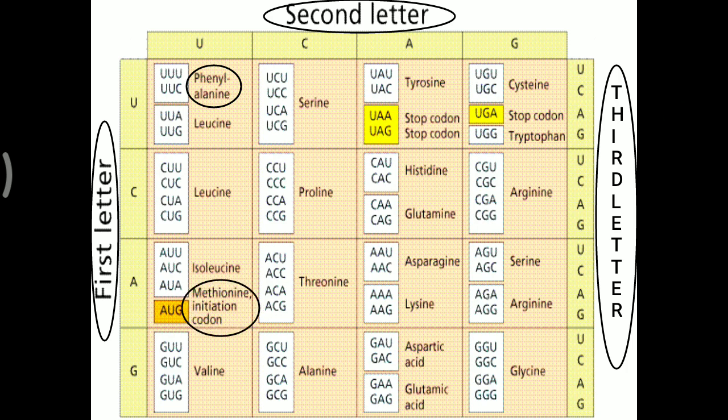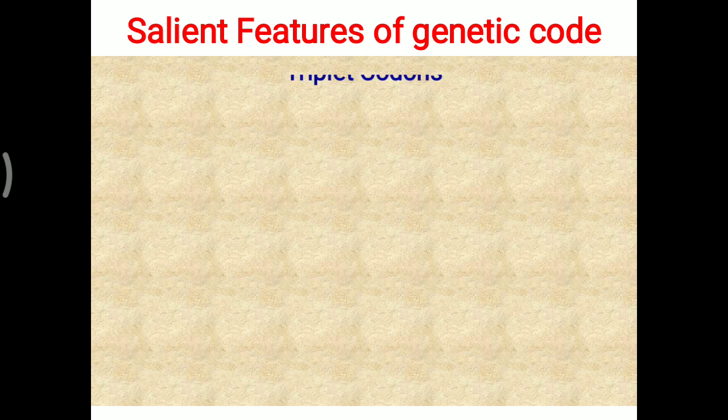Three codons work as stop codons. Before the stop codon, there is the initiator codon — AUG — which is common to all as the starting point of translation. AUG works as the initiation codon for the translation process and codes for the amino acid methionine. The stop codons are UAA, UAG, and UGA.